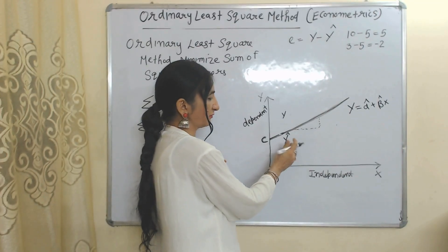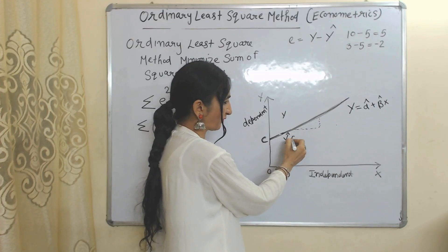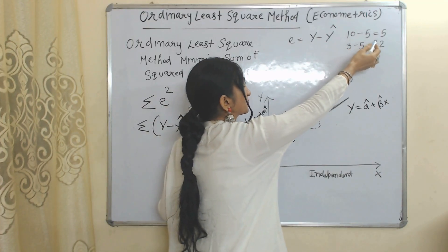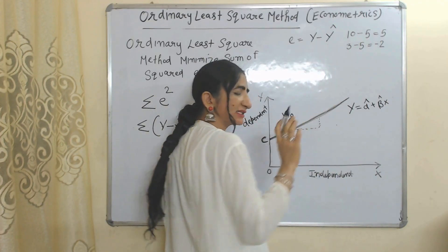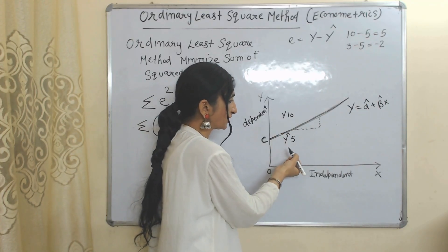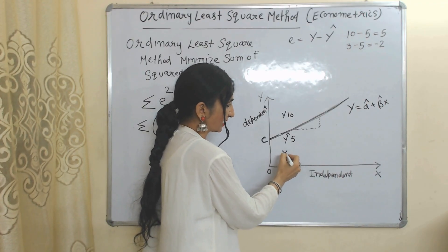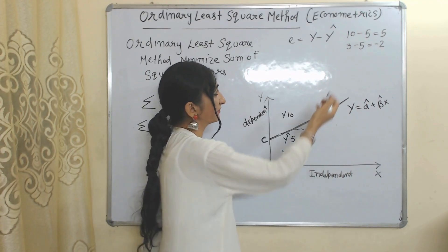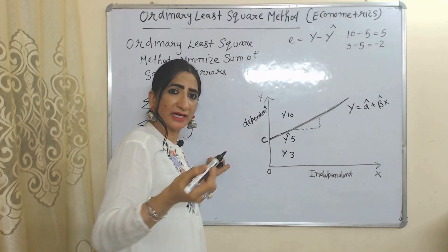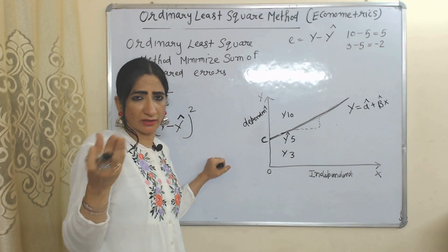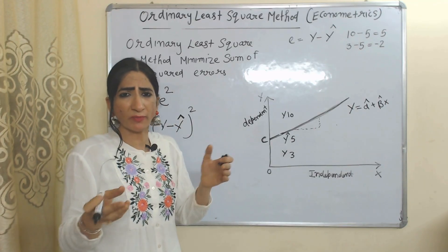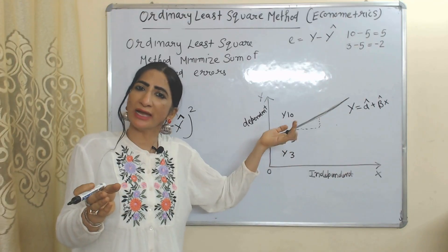Suppose the estimated value of Y is 5 and the actual observed value is 10 — then 10 minus 5 equals 5, so the error is positive. Now suppose the actual observed value is 3; in that case, our error is negative. So our error can be negative or positive, and that's why in order to prevent this problem, we square all the errors.